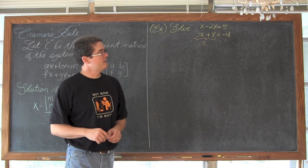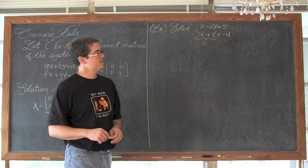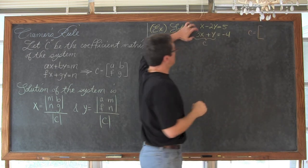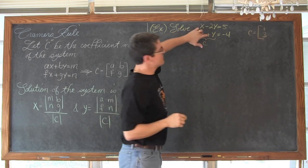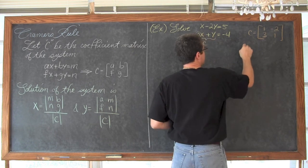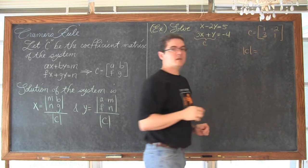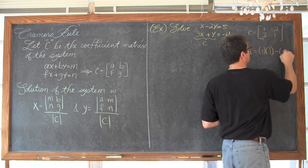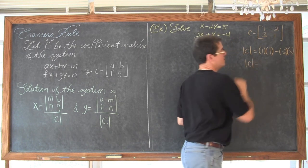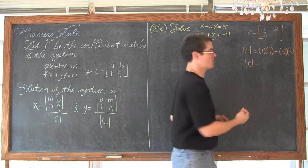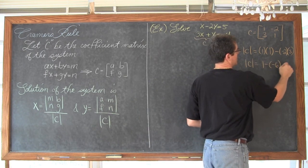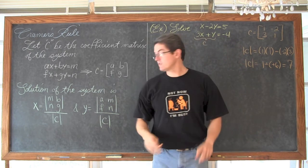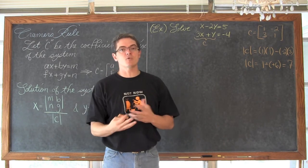Here is what it is going to look like in practice. We are going to solve x minus 2y equals 5 and 3x plus y is equal to negative 4. So matrix C is going to be equal to 1 and 3 in the first column and negative 2 and 1 in the second. The determinant of C is going to be equal to 1 times 1 minus negative 2 times 3. So the determinant of C is going to be equal to 1 minus negative 6. These negatives cancel out and we get 1 plus 6 is equal to 7.